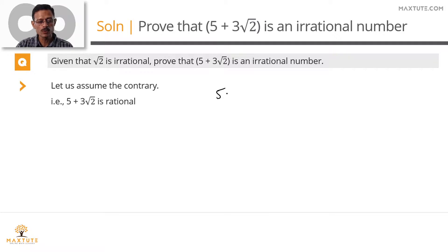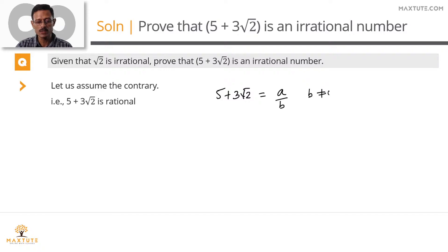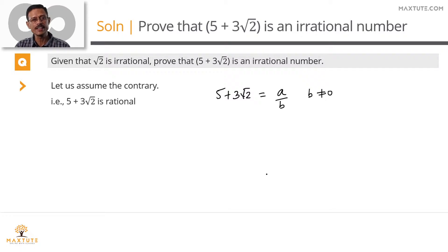So if 5 plus 3 root 2 is a rational number, then we can express 5 plus 3 root 2 as a fraction a by b, where a and b are integers, co-prime to each other — meaning there is no common factor between them — and b is not equal to 0, because any rational number can be expressed in the form a by b where a and b are integers, co-prime, and b ≠ 0.